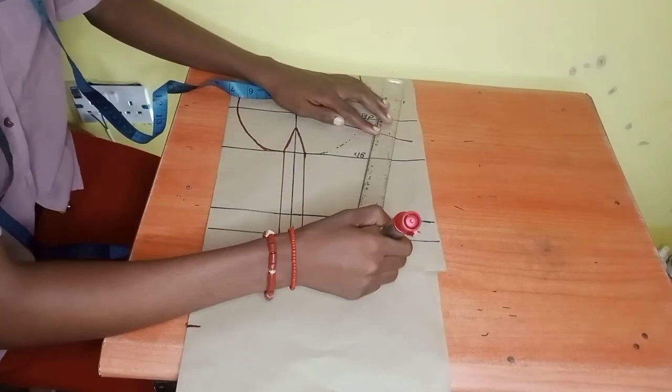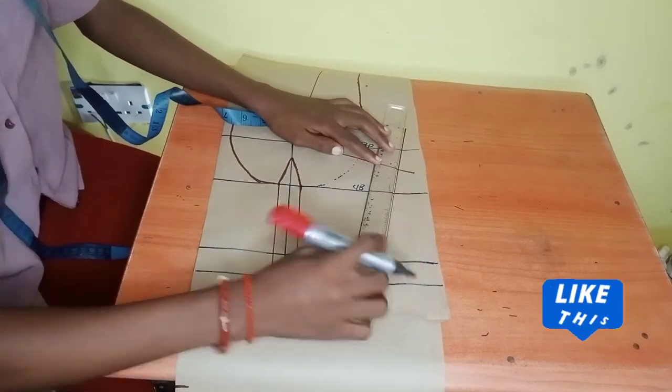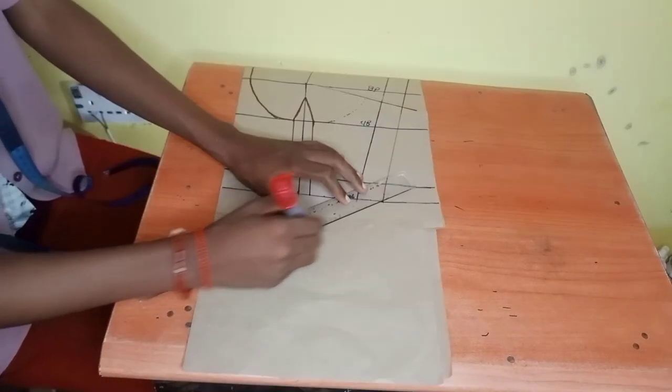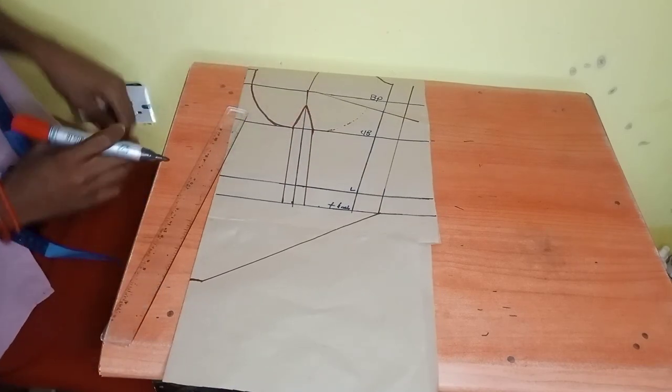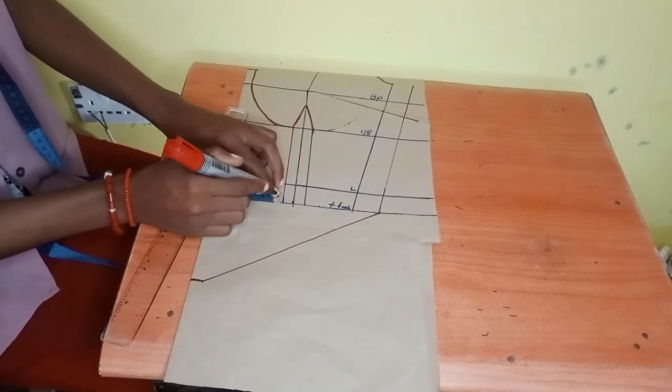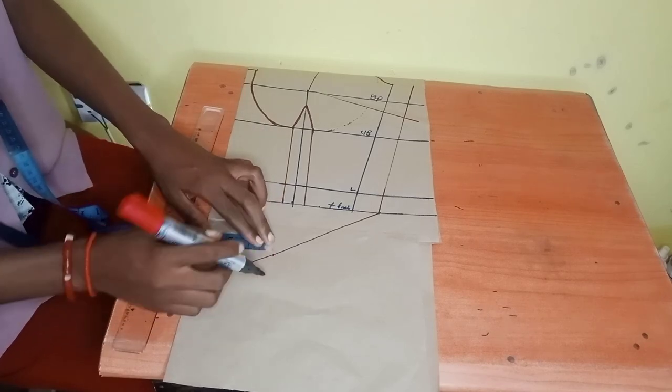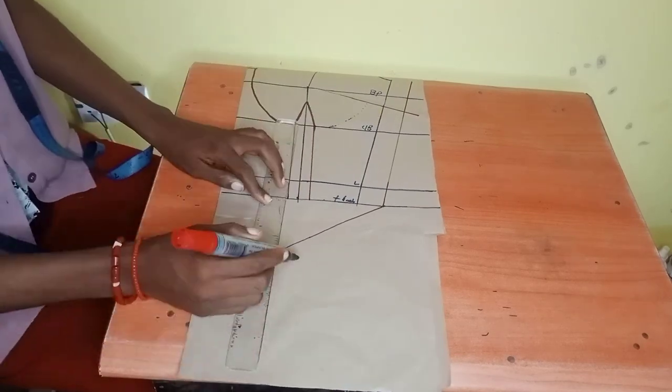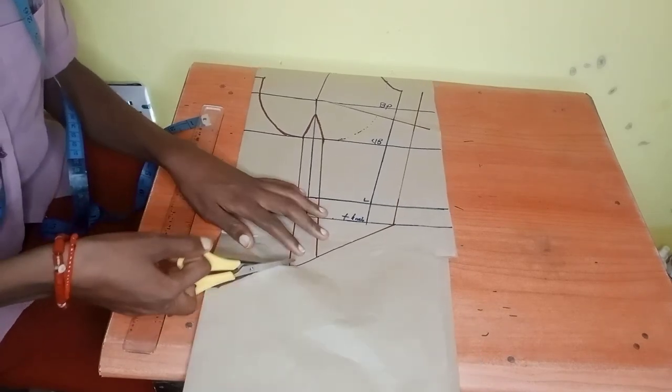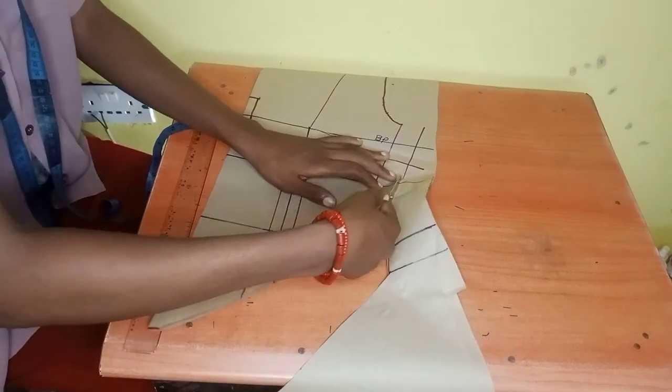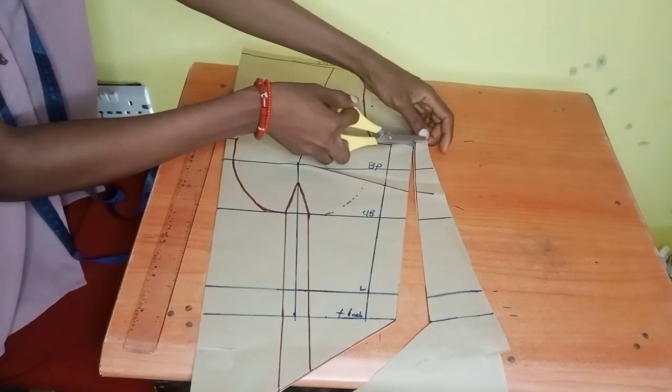I went out by half an inch, went ahead and added my allowance to my pattern paper, and went ahead to connect it just like that. So I'll be extending the line of my dart's measurements now to the bottom so I can trim it off. After doing this, guys, you're almost done with this tutorial, almost done with it.